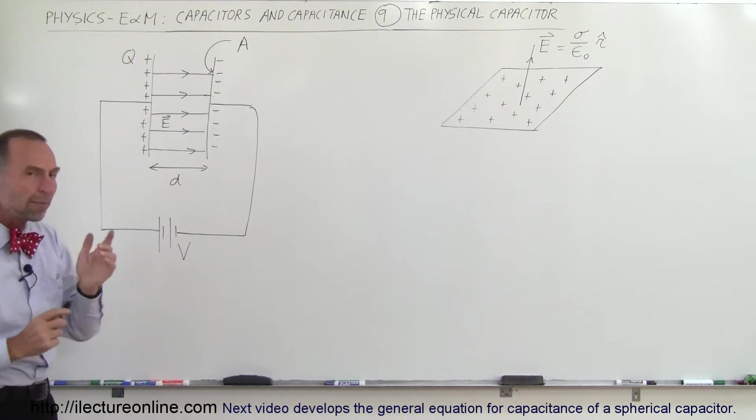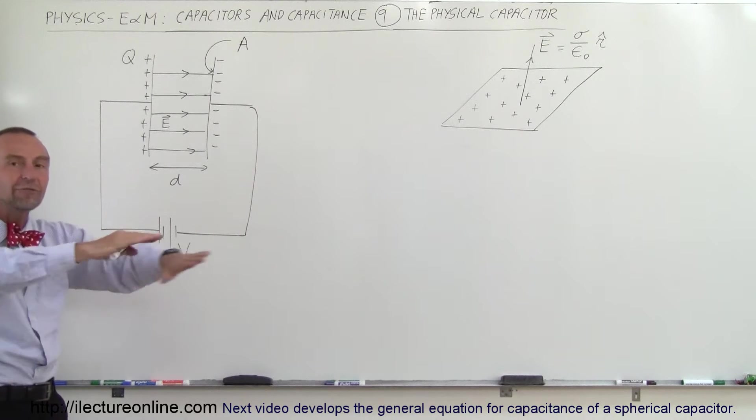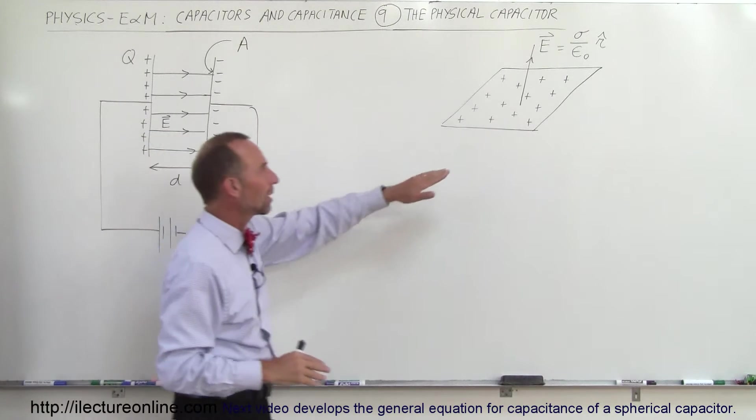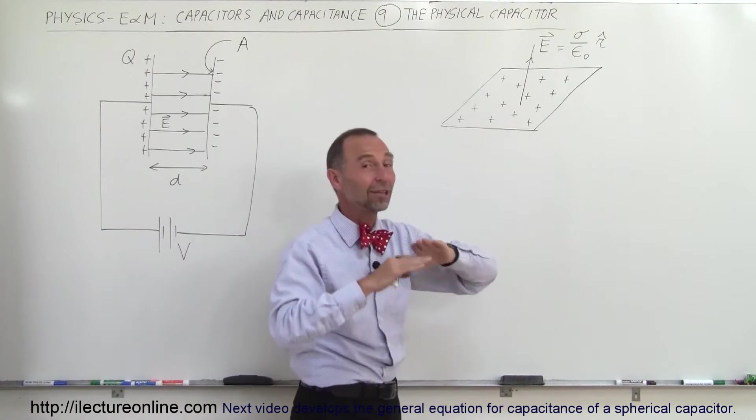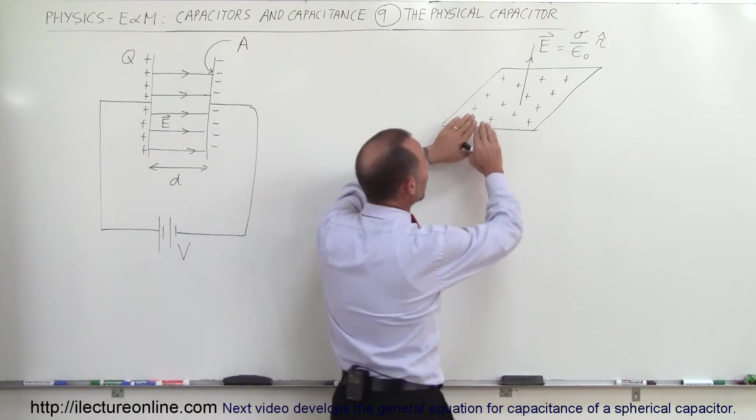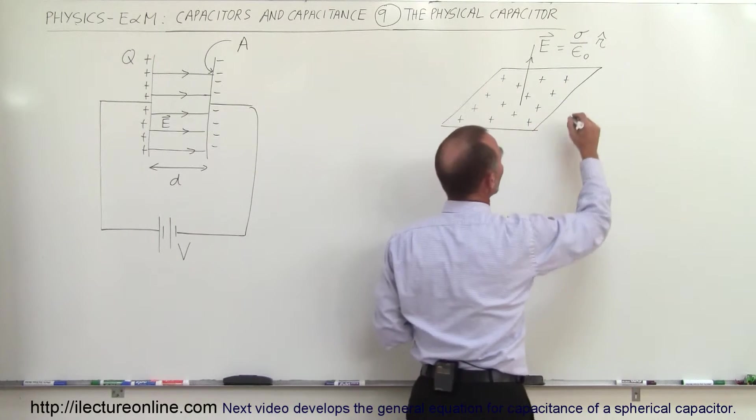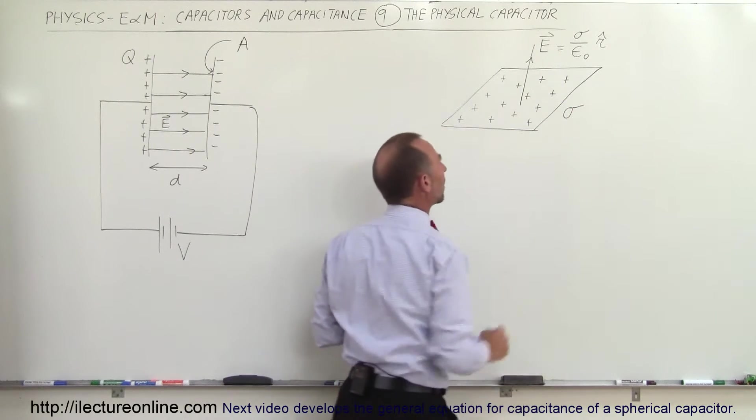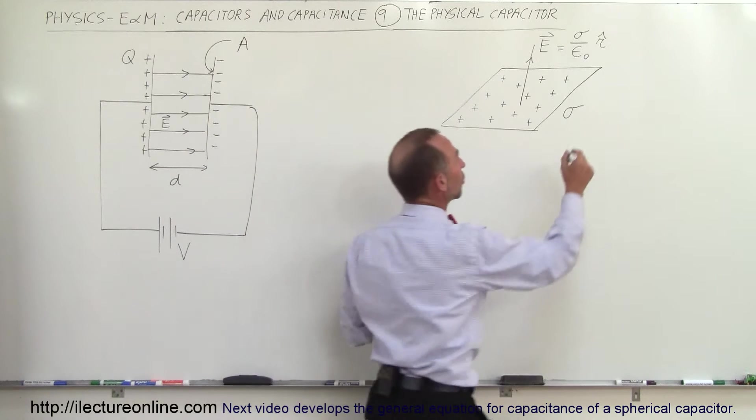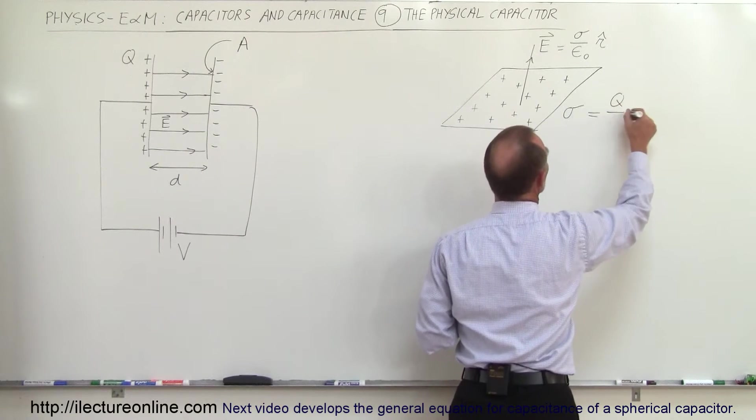If you remember back when you calculated the electric field from an infinite plane of charge, here's a representation. Of course I didn't draw it to be infinite, but imagine the plane to be infinite with charge and that the charge density of that plane is equal to sigma. Sigma represents charge per unit area.